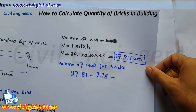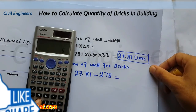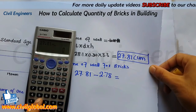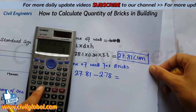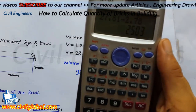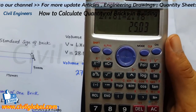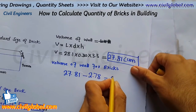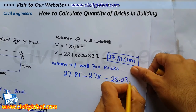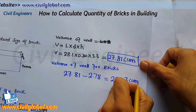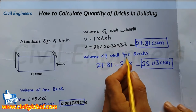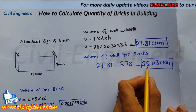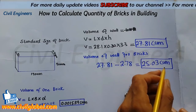So the net volume of wall for finding the brick quantity is: 27.81 minus 2.78 = 25.03 cubic meters. This is the volume of wall for which we need to calculate the number of bricks.